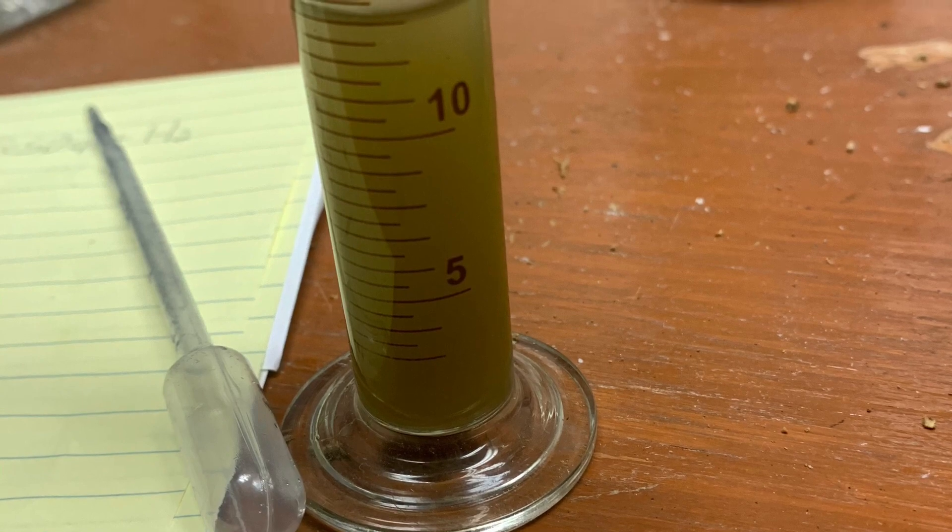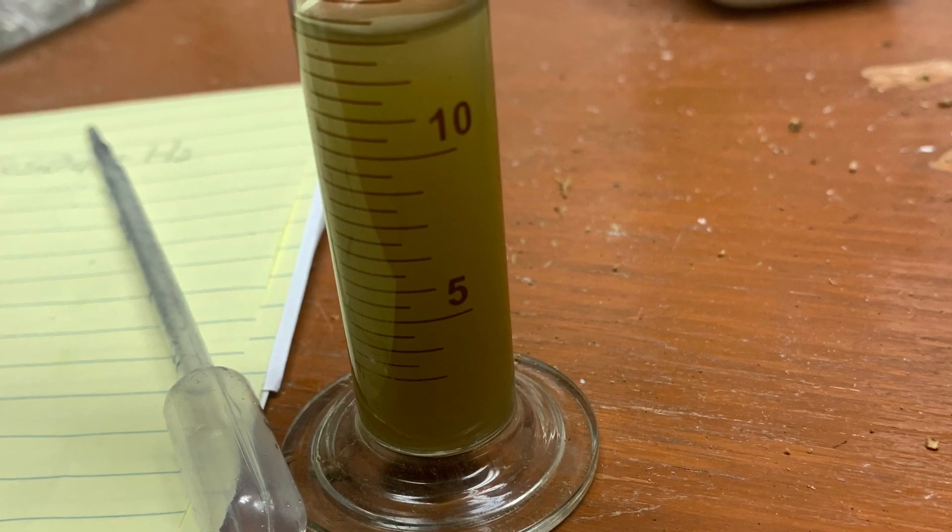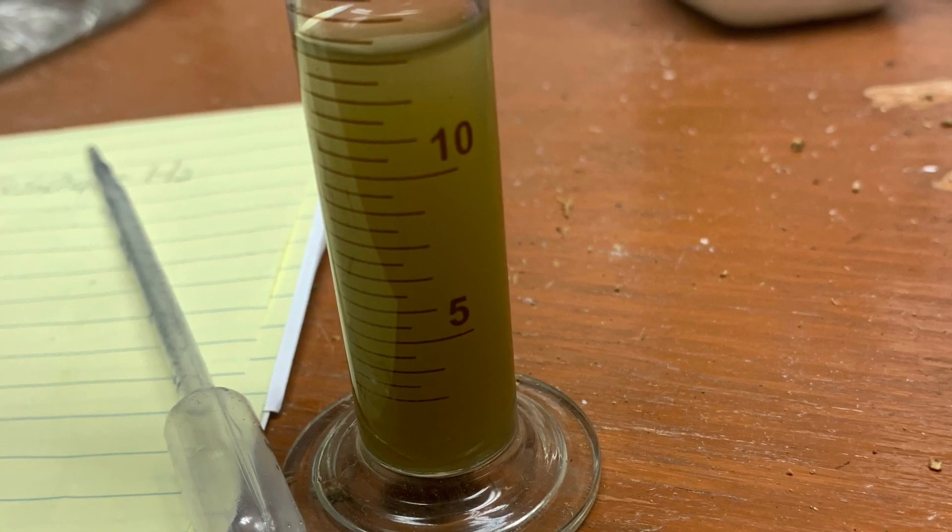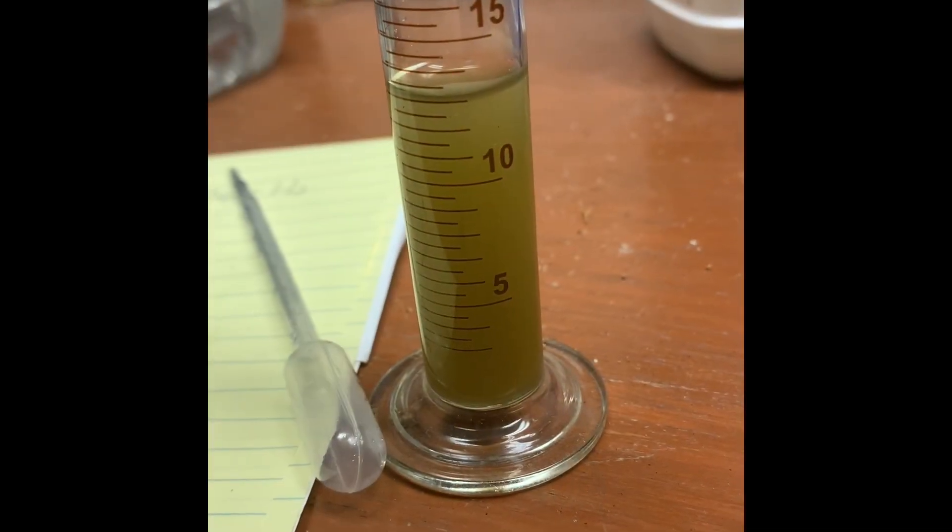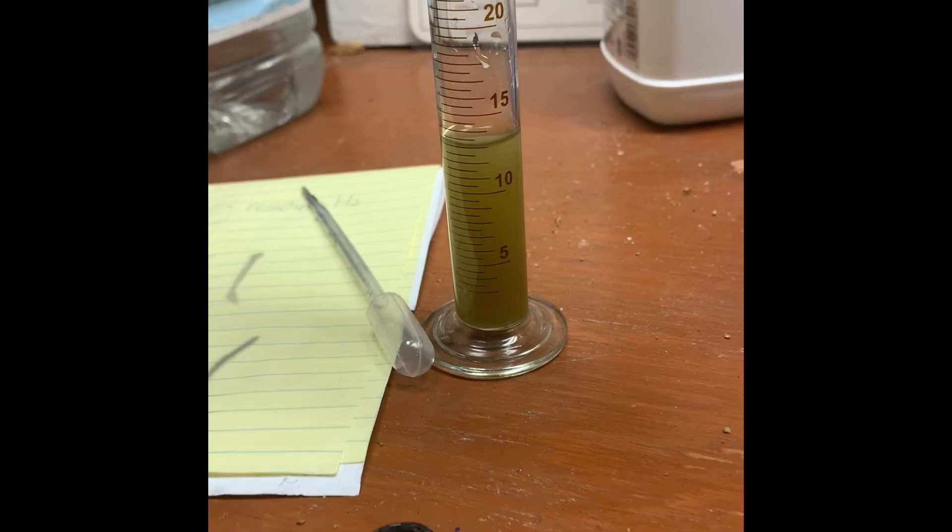Then we directly filter the solution into this graduated cylinder. As you can see here, it's starting to turn a bit yellowish, and this is indicative of the plus three oxidation state.